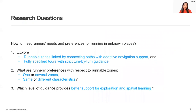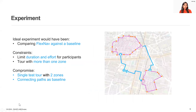We designed our experiment to investigate how to satisfy runners' needs and preferences for running in unknown places. Specifically, we asked: do runnable zones linked by connecting paths with adaptive navigation support satisfy runners' needs better than fully specified tours with strict turn-by-turn guidance? What are runners' preferences regarding having one or several runnable zones with the same or different characteristics in a single tour? And what level of guidance provides better support for exploration and spatial learning? We had initially planned a second test tour with strict turn-by-turn guidance as a baseline, but had to limit participants' effort and duration of the experiment.